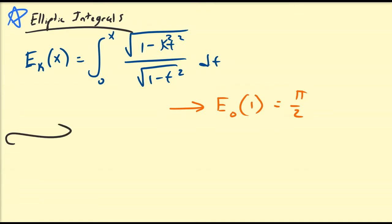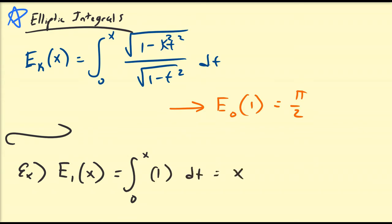For the majority of values of k, this function is non-elementary. But for some particular values of k, this function E of x actually is an elementary function. For example, consider E_1(x). By definition that's equal to the integral from 0 to x — letting k equal to 1 means the numerator and denominator are the same — so we just have the integral from 0 to x of 1 dt, which equals x. Do keep in mind that this is not the whole line y = x; it's only defined on the interval negative 1 to 1.